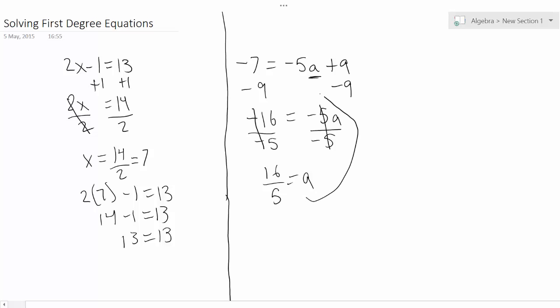So now you're going to take this answer and plug it back into your equation. So you're going to get negative 7 equals negative 5, 16 over 5, plus 9.